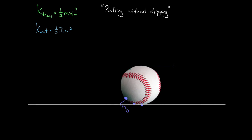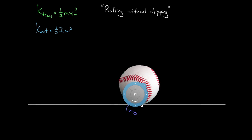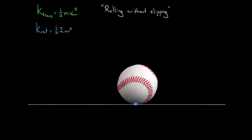Other points are moving — the point at the top of your tire is going crazy fast relative to the ground — but the point touching the ground shouldn't be skidding. Under normal operating conditions, the bottom of your tire is not skidding across the ground, which means that bottom point isn't actually moving with respect to the ground. It's stuck for just a split second with no velocity. That's what we mean by rolling without slipping.